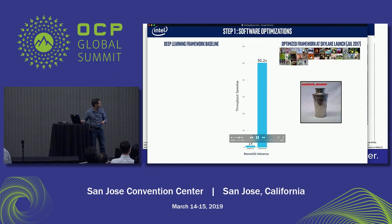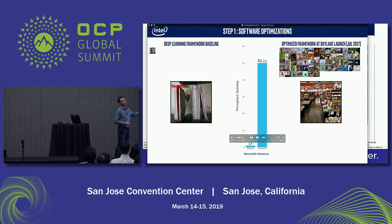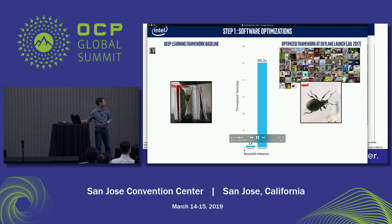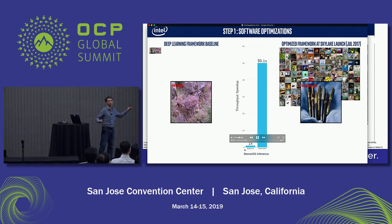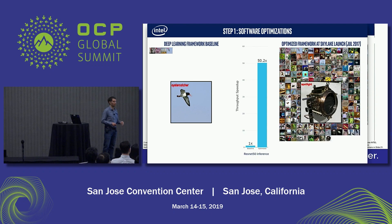On the left side you'll see the frame rate on ResNet-50 before Intel did any optimizations, and on the right side the performance of optimizations done up to the time we launched Skylake in July 2017. You can see that the gains from unoptimized to optimized code are around 50x for this particular model.